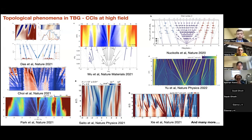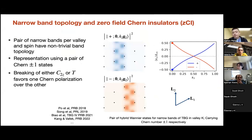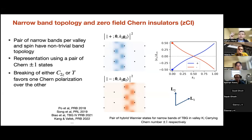One way to understand the correlated Chern insulators is to think about the topology of the narrow bands at zero field, which has been well studied since 2018. The pair of narrow bands per valley and spin can be rewritten using a pair of Chern plus and minus one states. They are protected by C2z — the in-plane 180-degree rotation with respect to the out-of-plane axis — and time-reversal symmetry. When both symmetries are present, one can show that stable topologies exist if an additional particle-hole symmetry is present.